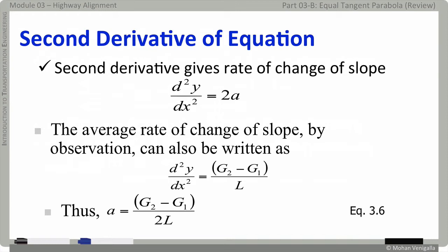Here, you have to be very careful with the signs. If G2 is negative, you have to put negative value in there, minus G2 minus G1, if G1 is positive, and divided by 2L. So, once you do a few problems, you will understand what I am saying about being careful with signs.